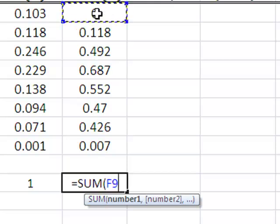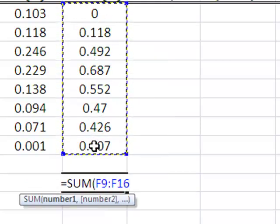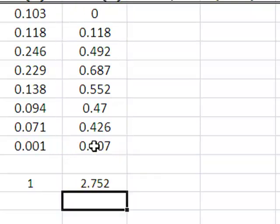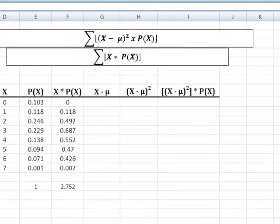all I need to do is now come back and highlight everything I want it to add together, hit enter, tells me that the mean of that probability distribution is 2.752. You could have used the autosum from the toolbar, but you can type the command in just as easy.